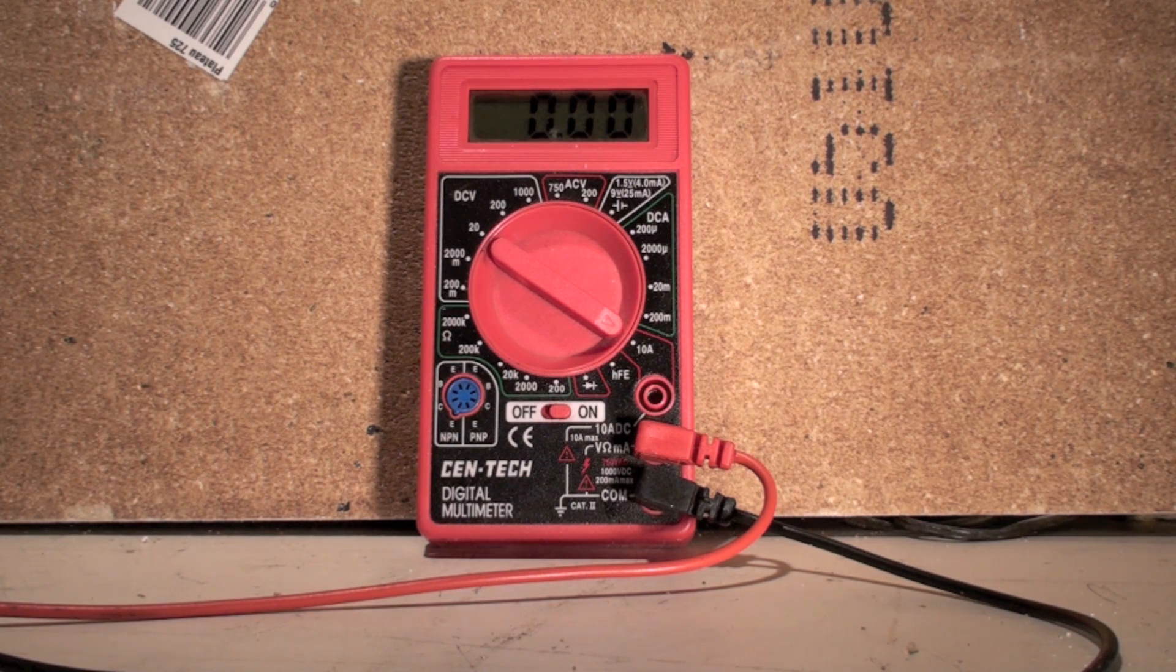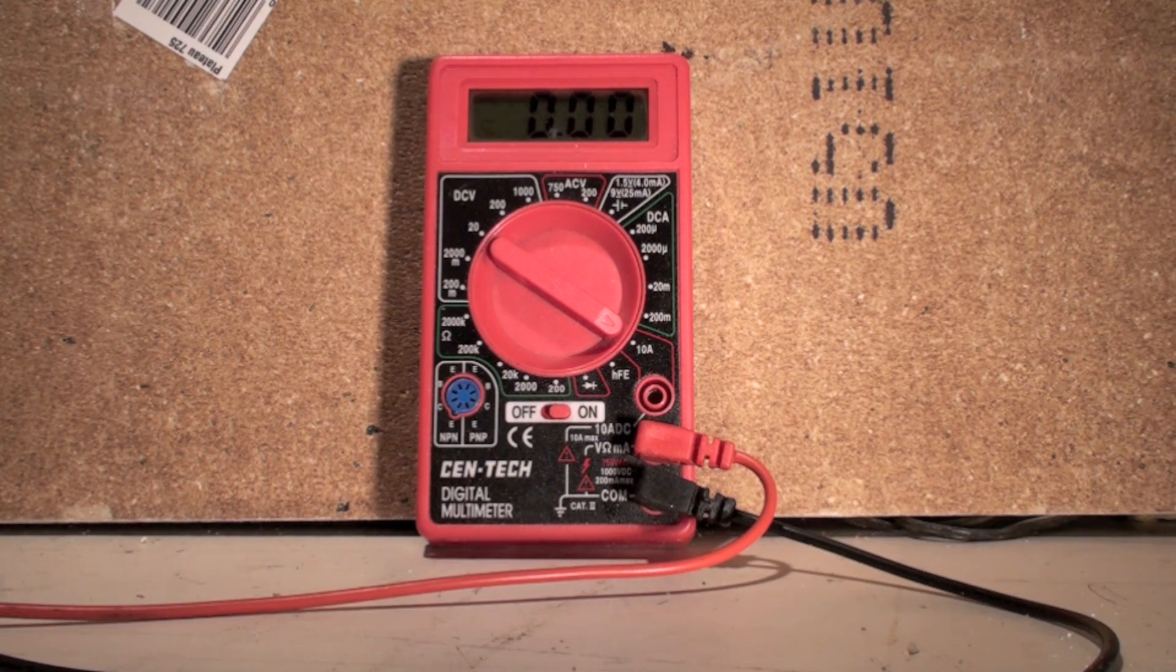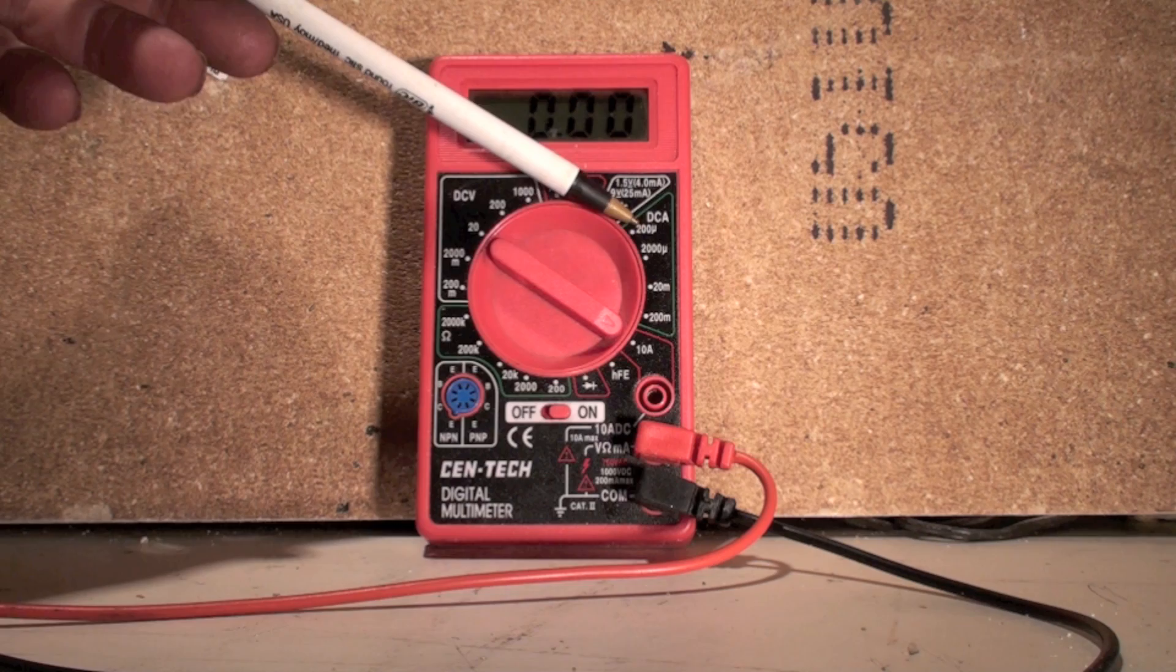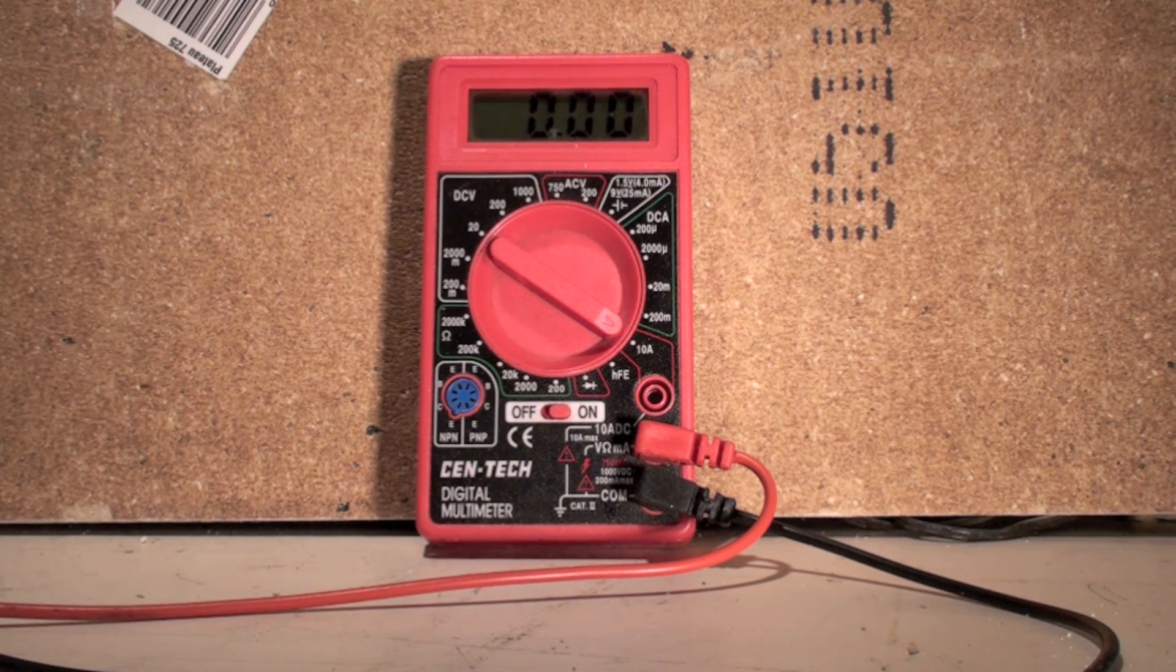DC amps right over there is going to go from 200 microamps up to 200 milliamps. All those ranges are in there for small amp draws.